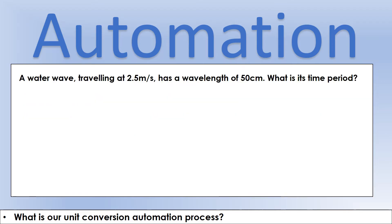Let's have an example of putting this into practice. I'm just scanning through — not reading the question — looking for prefixes. '2.5 meters per second' — no prefix, fine. 'A wavelength of 50 centimeters' — we found a prefix. So following the process, we convert straight away: centi tells us we're going to divide by 10 to the 2, or 100. So 50 divided by 100 gives 0.5 meters. Now we can carry out the question without worrying about that conversion.